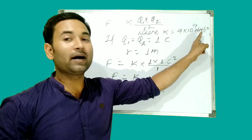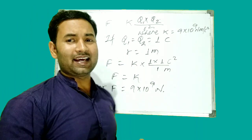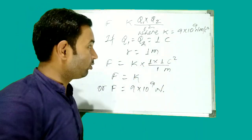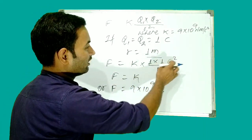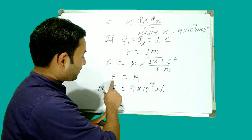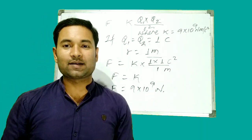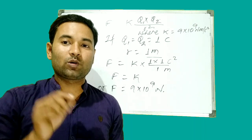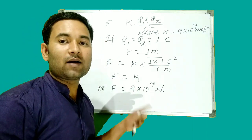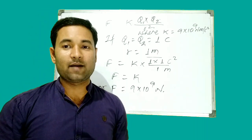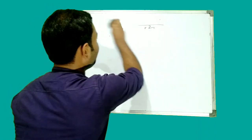The value of k is 9 × 10⁹ Nm² per C². If we assume that Q1 and Q2 are both 1 Coulomb and the distance between them is 1 meter, then F = k × 1 × 1 / 1², which gives F = k = 9 × 10⁹ Nm. This helps us understand that one Coulomb of charge placed 1 meter from another Coulomb of charge experiences a force of 9 × 10⁹ N.